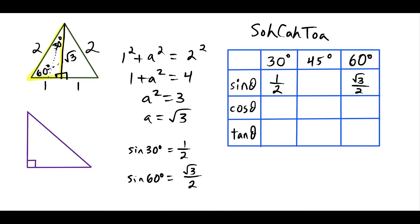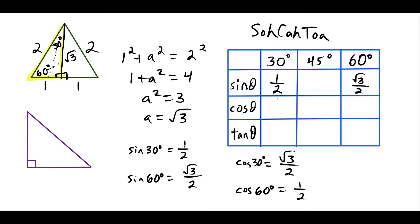Switching over to cosine — cosine is the ratio of the side adjacent to the hypotenuse. For cosine of 30 degrees, the side adjacent to 30 is root 3 and the hypotenuse is two, so cosine of 30 is root 3 over 2. For cosine of 60, the side adjacent to 60 is one and the hypotenuse is still two, so cosine of 60 is one half.